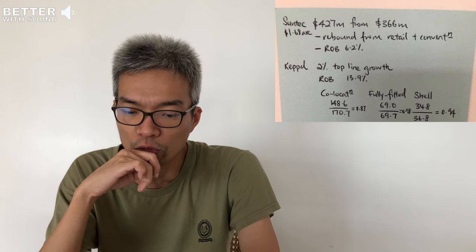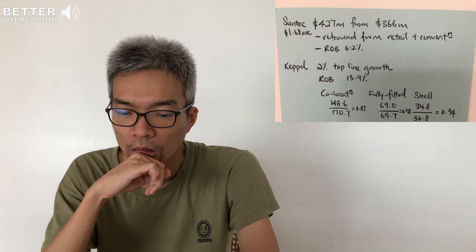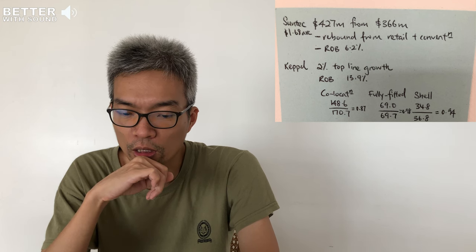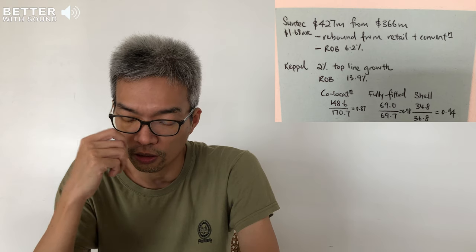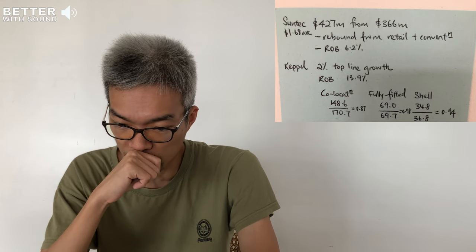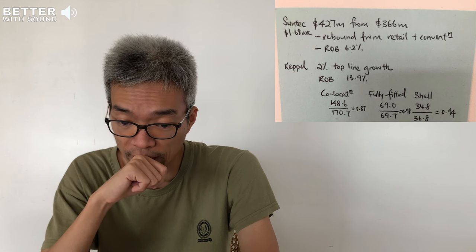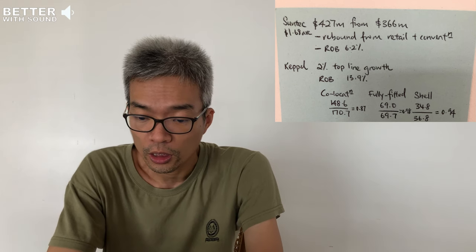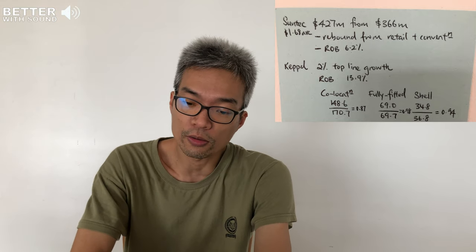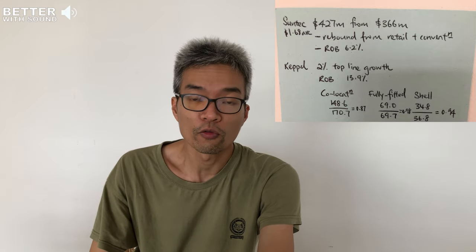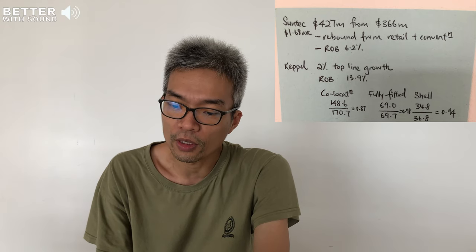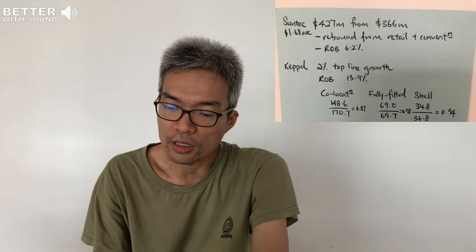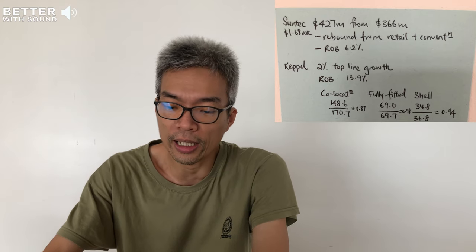The next thing I also wrote down was the profit margins for each kind of asset: the co-location, fully fitted and shell. It still fits what I understand - for co-location the net profit margins is around 87 percent, fully fitted 98%, shell is 94%. So that matches what I learned of CapitaLand DC when I first took a stake in it.